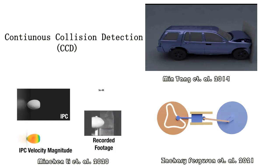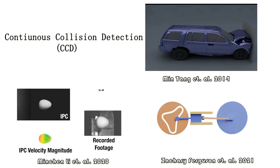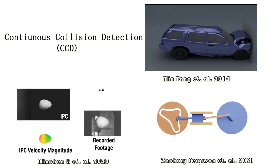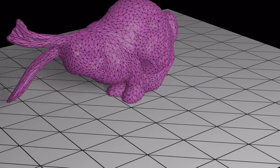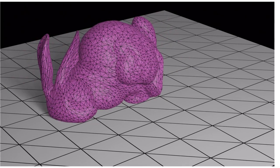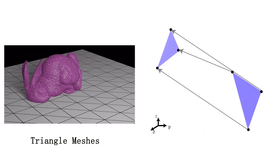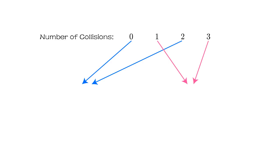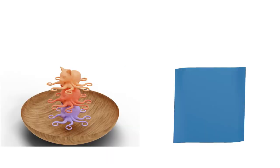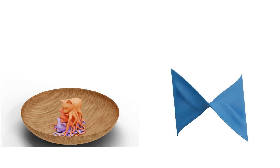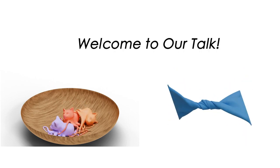Continuous collision detection is widely used in physical simulations. We explore CCD methods for triangle meshes whose vertices move along linear trajectories in a time step, and introduce the first exact root parity counter for CCD functions. Our method enables the efficient and robust simulation of closed meshes.